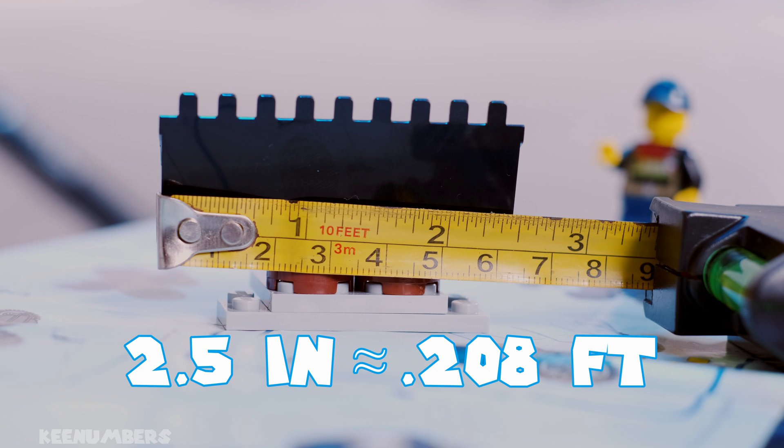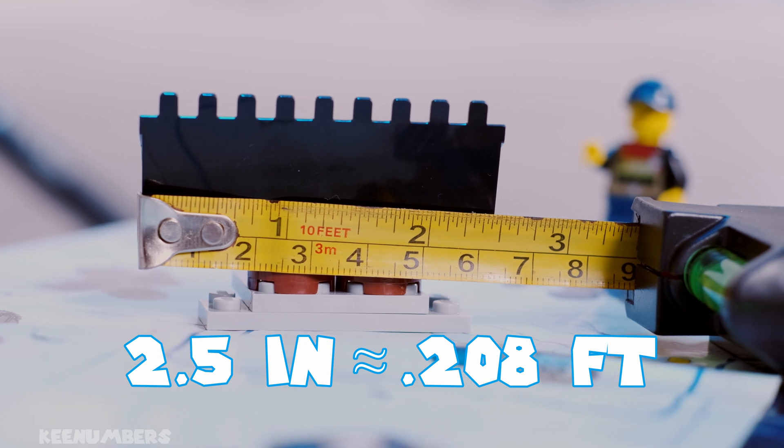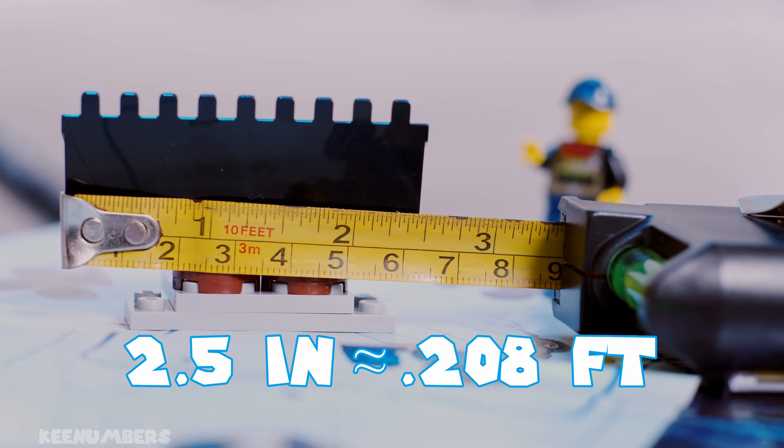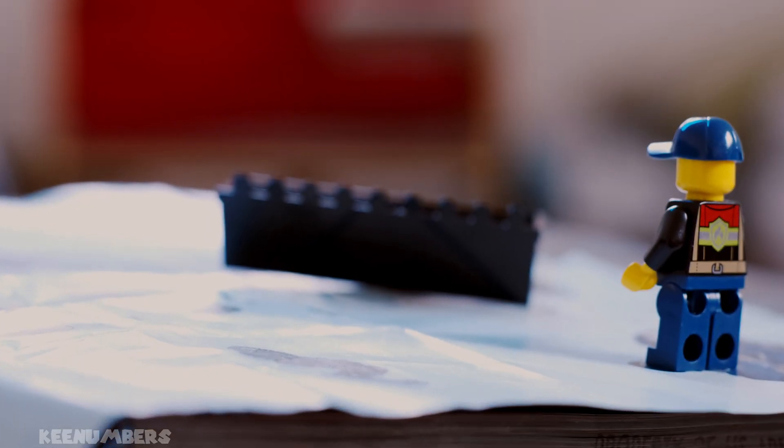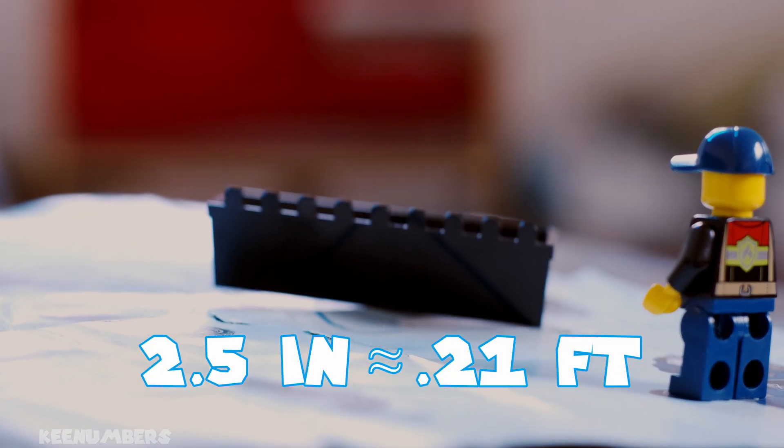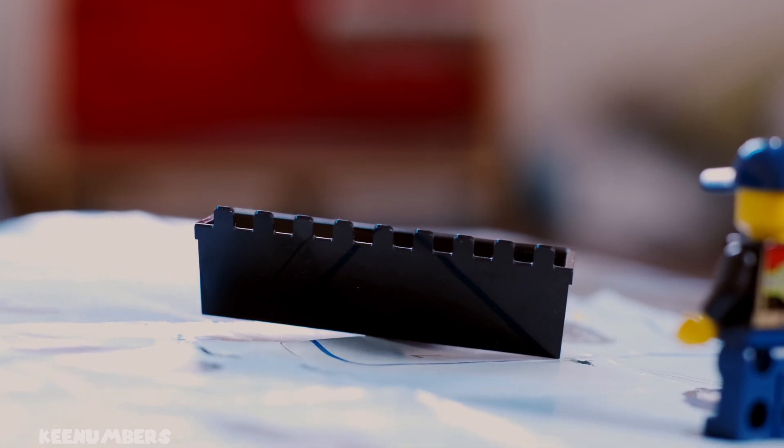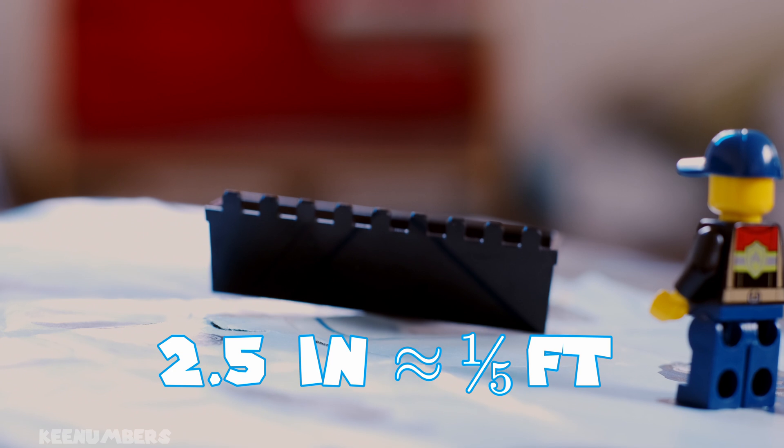So 2.5 inches is approximately 0.208 feet, or you can just round up because of that eight and say it's about 0.21 feet. If you really want to round down, you can just say it's about two-tenths or one-fifth of a foot.